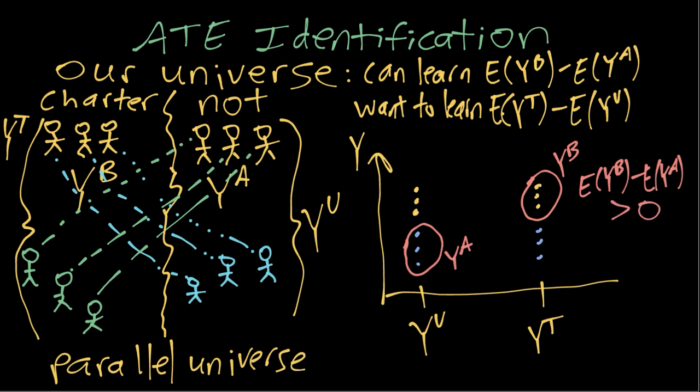Whereas if we had been able to see all of the untreated potential outcomes and all of the treated potential outcomes, we'd see that actually, the way I've drawn it, there's no effect. The average is around here for untreated, and the average is here for treated. So actually the ATE is zero.